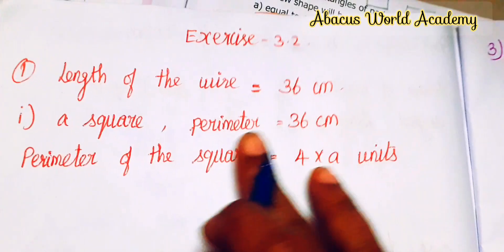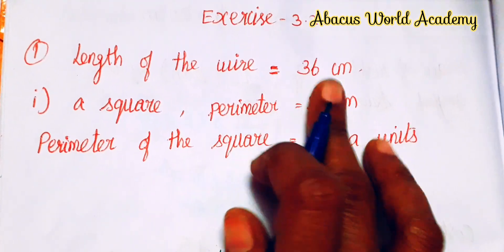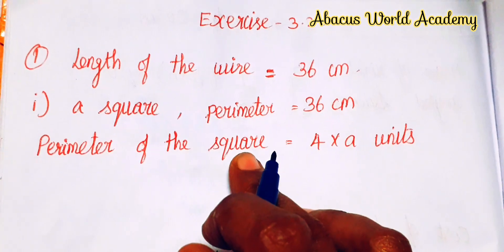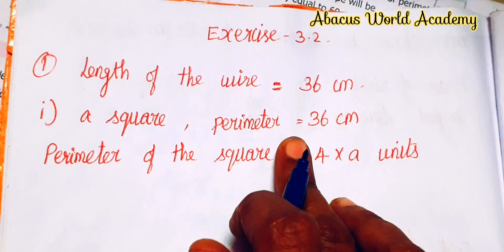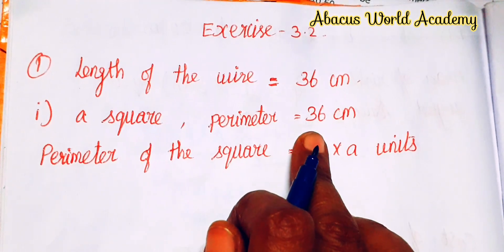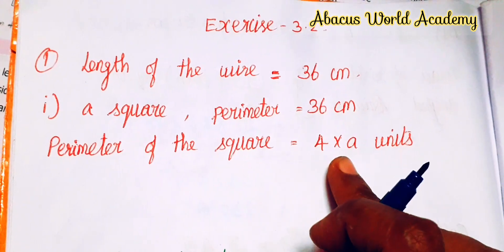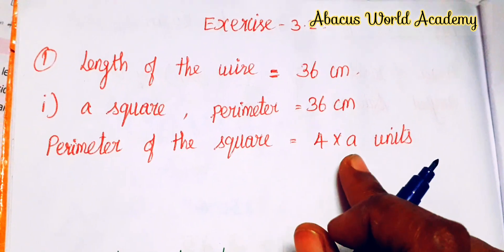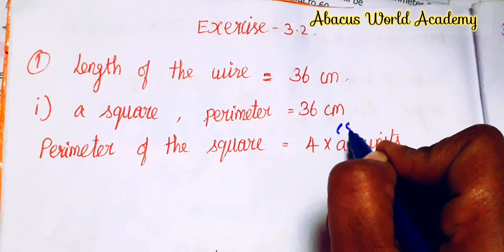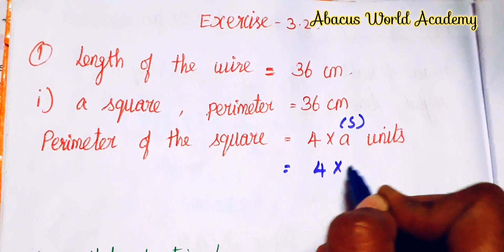So, length of the wire is equal to 36 cm. This total wire length is the perimeter of the shape. So the wire length equals the perimeter. We need to find the square. So, perimeter is equal to 36 cm.